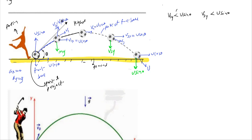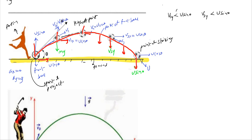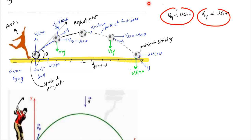We give names to these points: this is the point of projection, this particular point is the highest point, and this is the point of striking. When moving from point of projection to the highest point, horizontal component remains the same while vertical component keeps on decreasing. From highest point to point of striking, vertical component keeps on increasing and horizontal component remains constant.